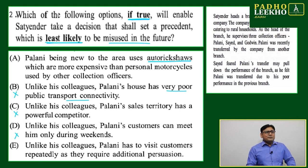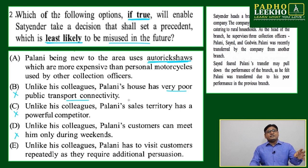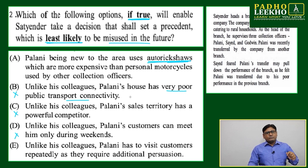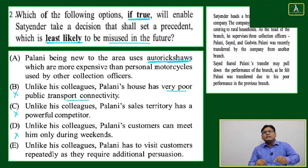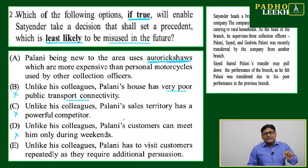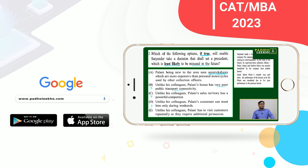Option A is the only one we can say is least likely to be misused in the future, because it is based on certain statistics or certain data. Options B, C, and D can be manipulated or changed over time — next month or next quarter, they can change. Option A is least likely to be misused because it is very proven: going by auto rickshaw is verifiably more expensive than a personal motorcycle. So we will mark Option A.